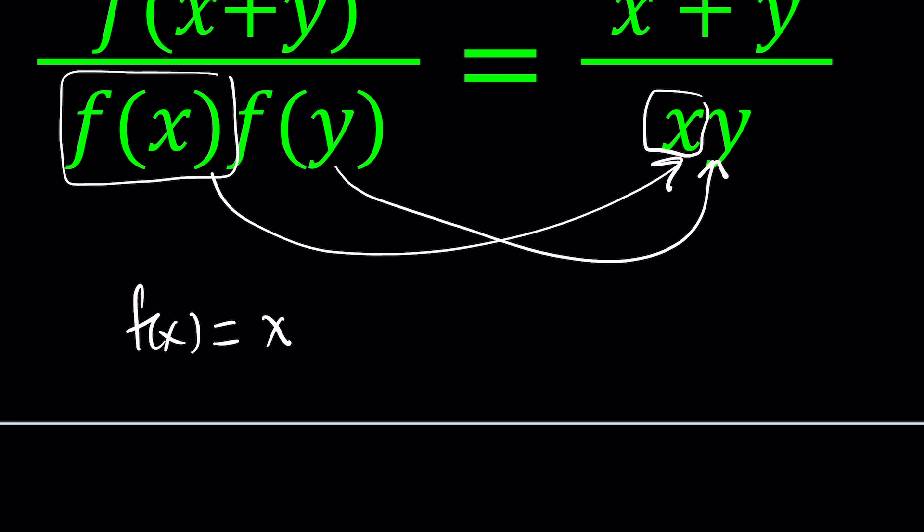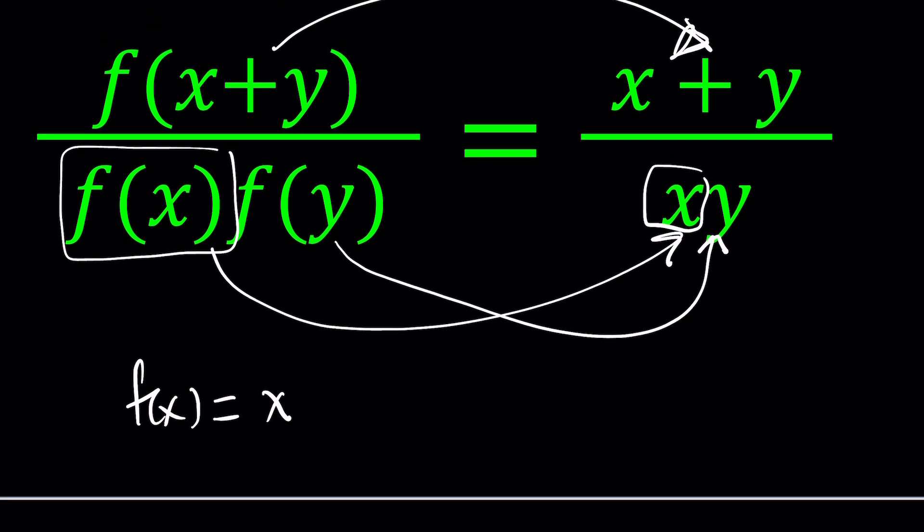When you compose f of x with something else, another function, you'll get the same function from either side. That's why it's identity. So, because f of x identity means that the input and the output are the same. It's unchanged. So, if your input is x plus y, the output will be the same. Does that make sense?